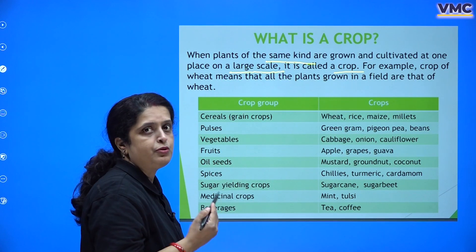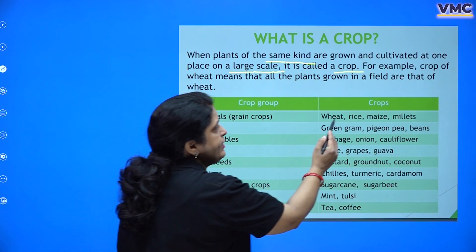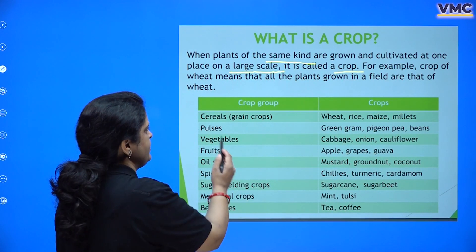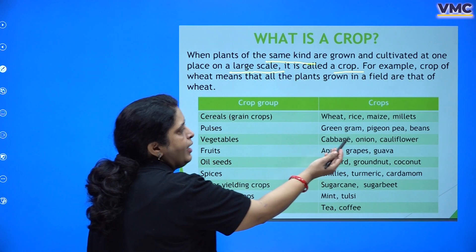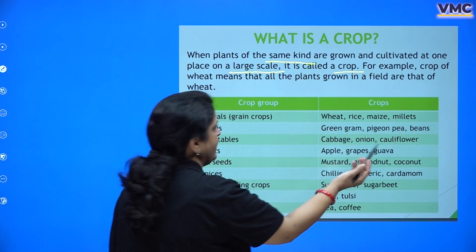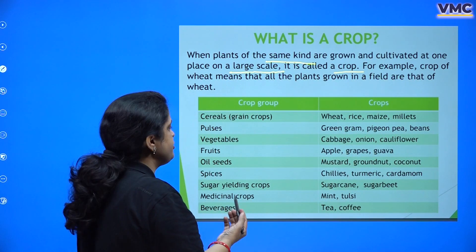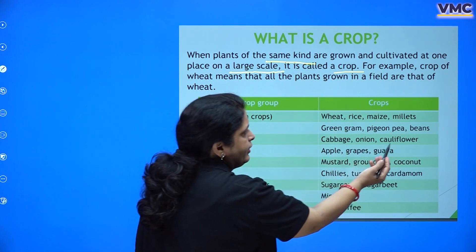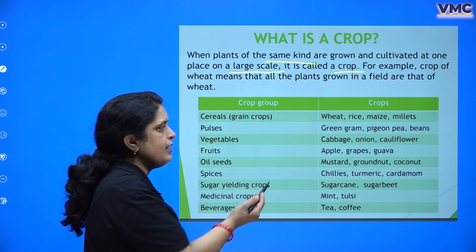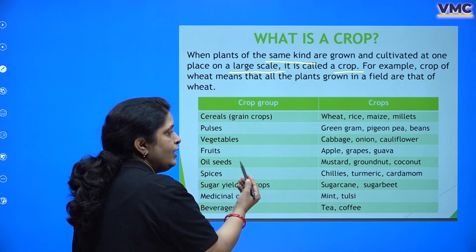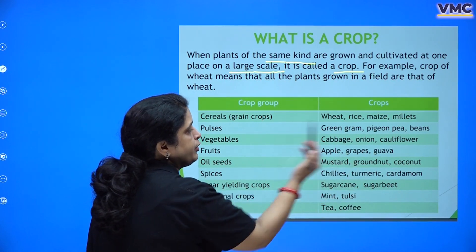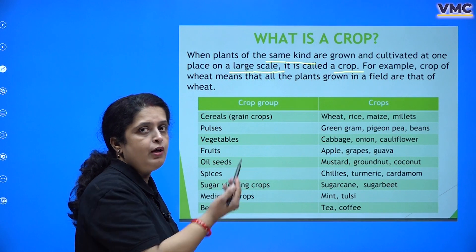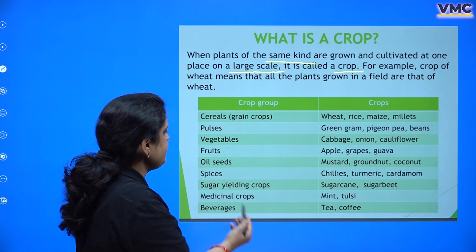The cereals — the most common being wheat, rice, maize, and millet — are needed on a daily basis. Pulses include green gram and beans, among others. Vegetables like cabbage, onion, and cauliflower; fruits like apple, grapes, and guava; and oil seeds like mustard, groundnut, and coconut, which are useful in producing oil that we use on a daily basis.